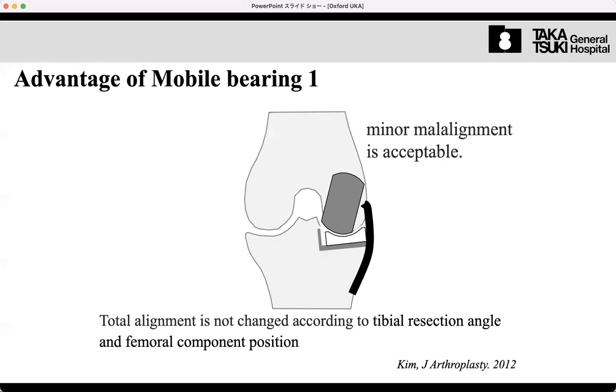This is the advantage of mobile bearing. Due to the wide contact area, some minor malalignment is acceptable. According to this, minor 10 degrees of malalignment can be accepted.